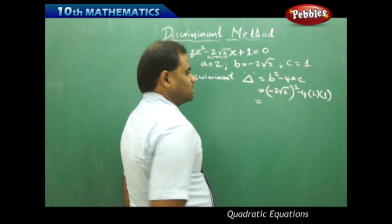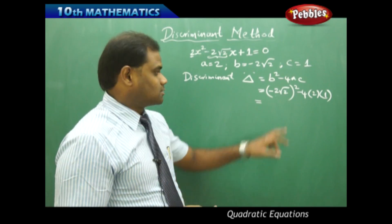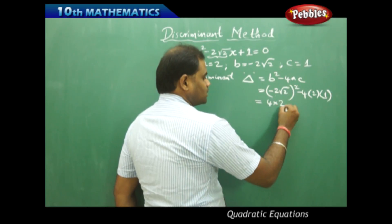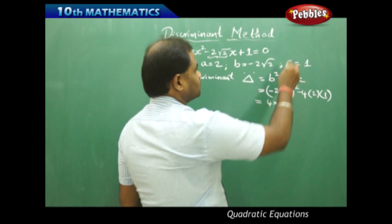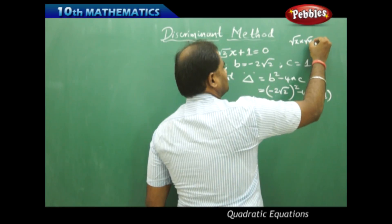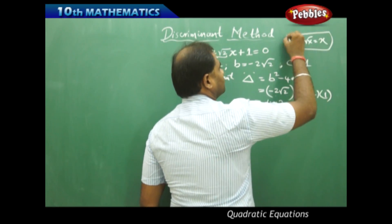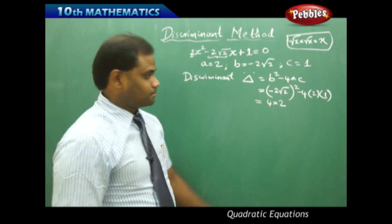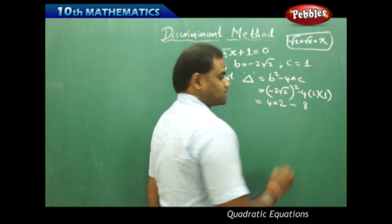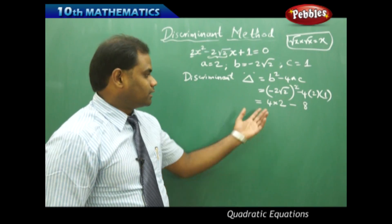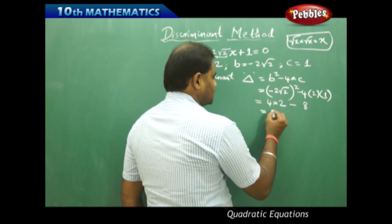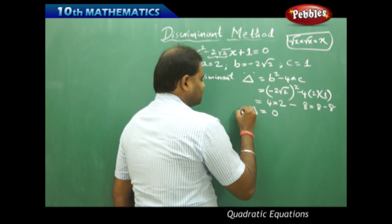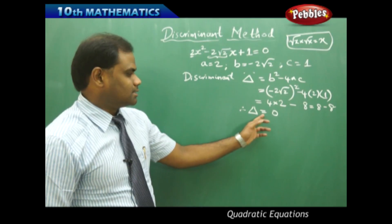Expanding the square: 2 squared is 4 and root 2 whole squared is 2, since root x times root x always equals x. So the first term becomes 4 times 2, which is 8. Then minus 4 times 2, which is 8. This gives us 8 minus 8, which equals 0. Therefore, the value of the discriminant delta is 0.